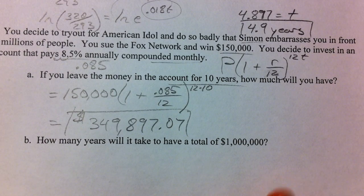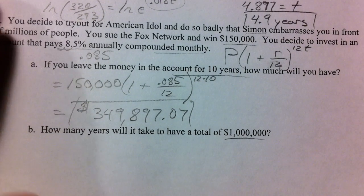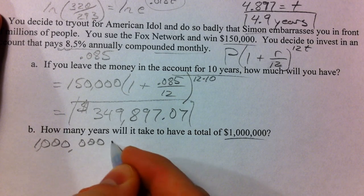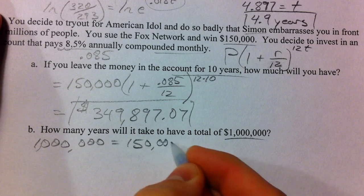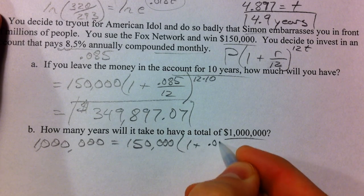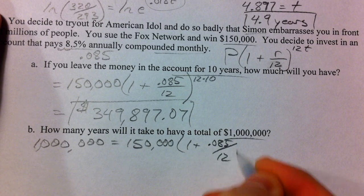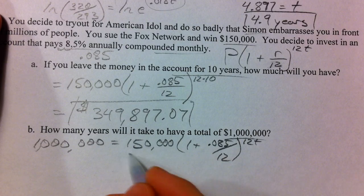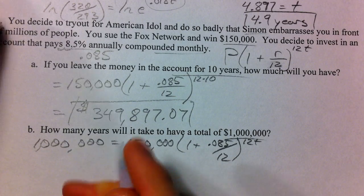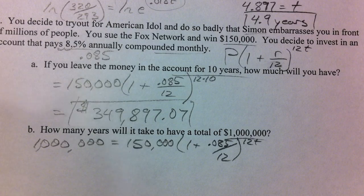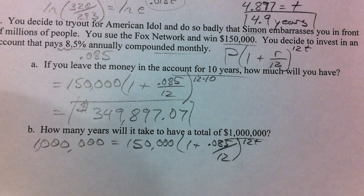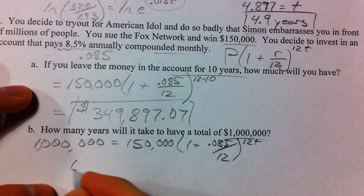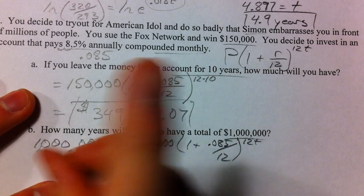What we're looking for now is when will we get 1 million how long is it going to take so 1 million equals 150,000 times 1 plus .085 over 12 raised to 12 times whatever t is. First thing we're going to do is divide by the 150 so 1 million divided by 150 so we get 6 and 2 thirds or 20 thirds right.